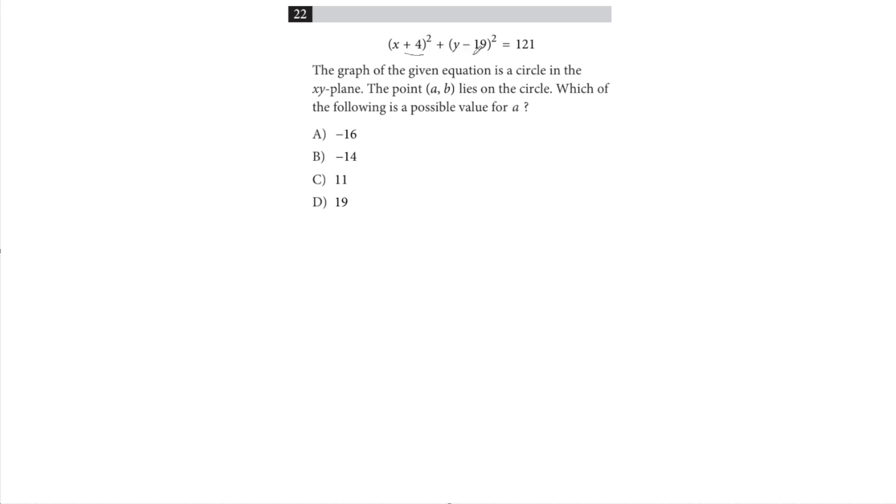Obviously, the opposite of these two numbers in parentheses will give us the center of the circle. So in this case, the center of our circle is negative 4, 19. And then this number over here is our radius squared. So our radius is the square root of 121, which is 11.